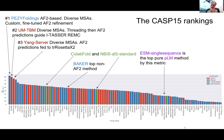One group here — UNRES — was misclassified as a language model method; it's actually a coarse-grained representation of proteins, using one blob for the main chain and another for the side chain, with coarse-grained molecular dynamics and a coarse-grained force field. That might be the most interpretable method in the competition, and you can see how far down the ranking list it sits.